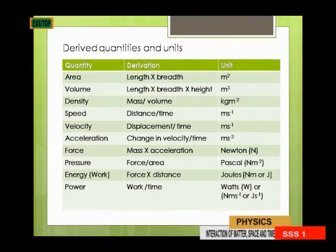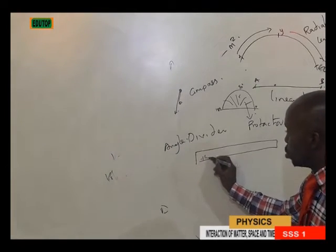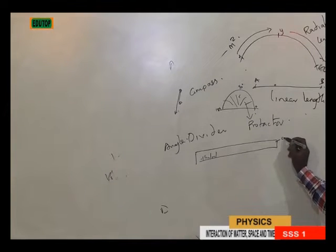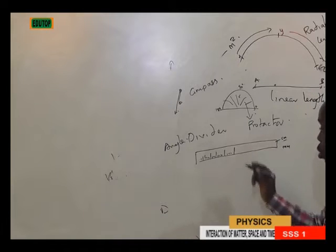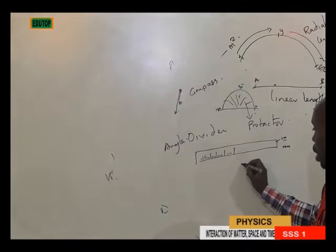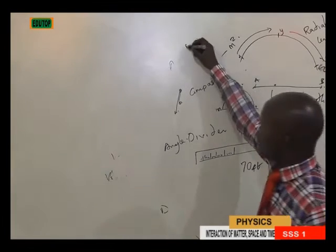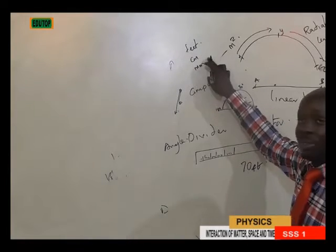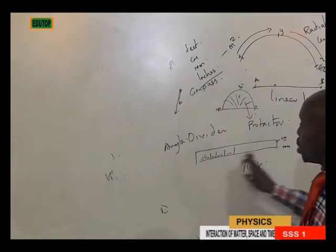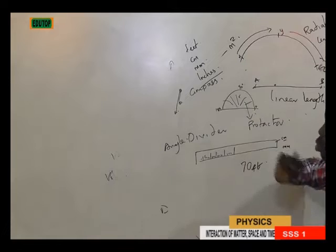We have some activities for you to practice: how to measure your classroom, a hall, or a piece of clothing. Just take your ruler — your ruler is calibrated, meaning the measurements are marked on it. Your ruler can be calibrated in centimetres or millimetres. You can use it to measure your building. If you take the longer part of your room, you might measure up to 70 feet. Whichever device you use to measure your room, you must know what units it is calibrated in.